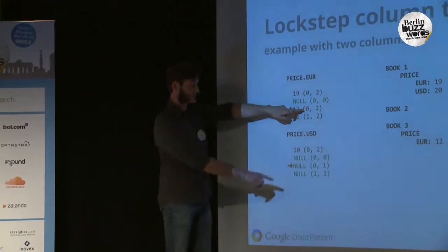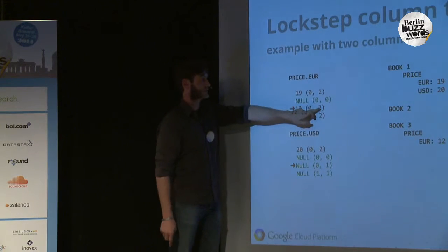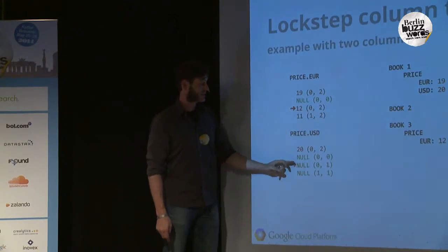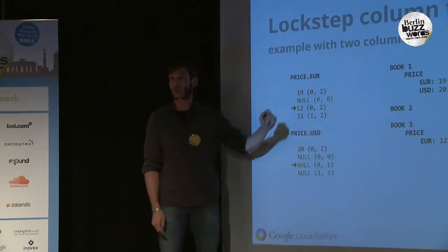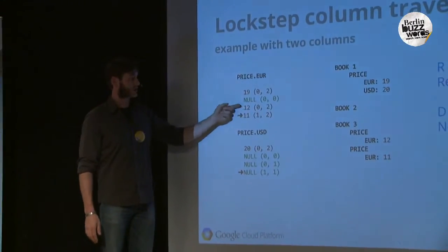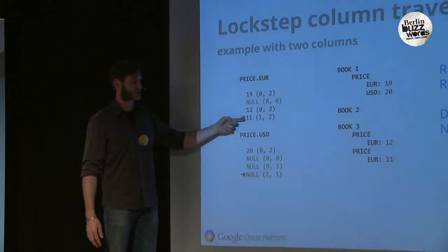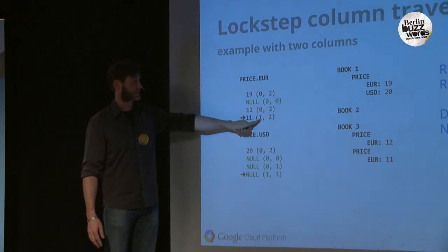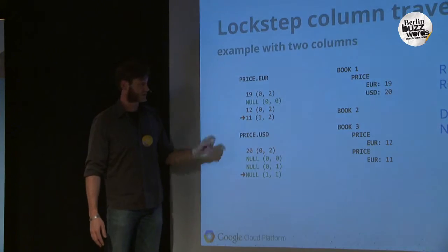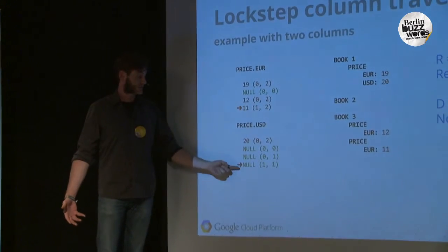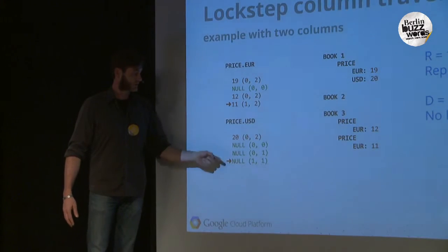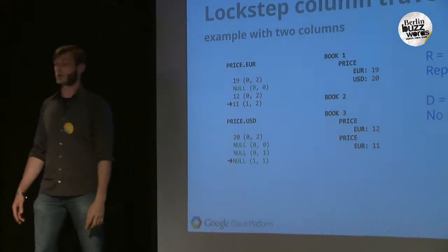Next: repeat count zero, a new book. Definition count two — price and euro are defined, so we have an item. Then definition count one because price is defined but it's not a USD price, it's a euro price. Then we have a repetition — this element has another price in euro; price and euro are defined, so it's two. And down here, a null element — the USD value is not defined; it's a repetition, price is defined but USD is not, so it's one.